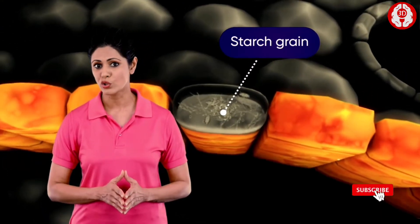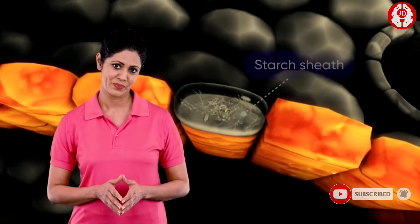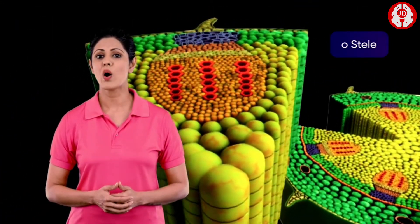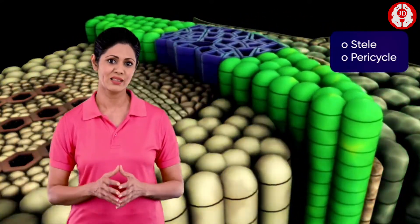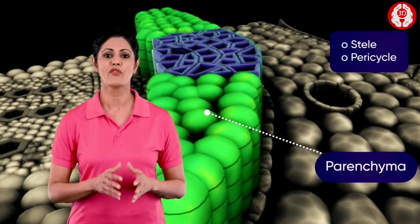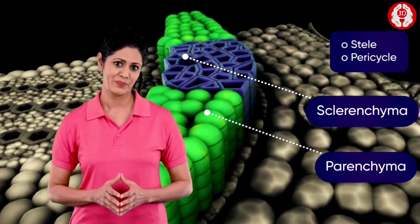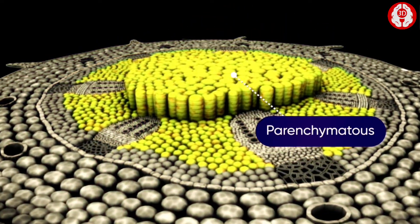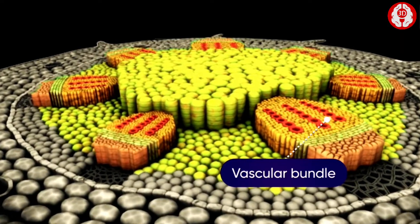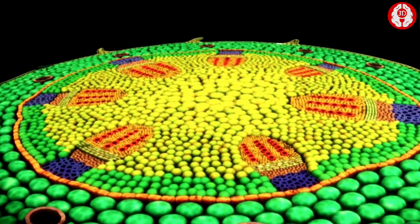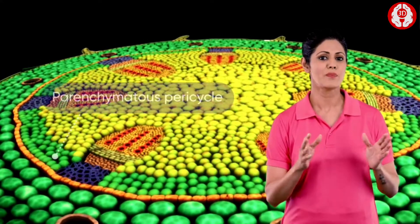The endodermis is formed of a single layer of parenchymatous cells which contains starch grains, and therefore is also known as the starch sheath. The endodermis encloses the stele. A few outer layers of the stele called the pericycle are made up of alternately arranged masses of parenchyma and sclerenchyma. The parenchymatous region encircled by vascular bundles occupies a larger central area and is known as the pith.